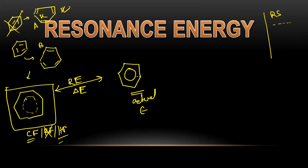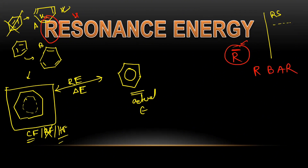In the case of benzene, this extra difference is coming from aromaticity also. In different questions they will give us molecules to compare resonance energy. To handle this kind of problem I have a trick: take the letter R, and draw a bar over it — R-BAR. Resonance energy starts with R, so take a bar over R. Our word is R-B-A-R.